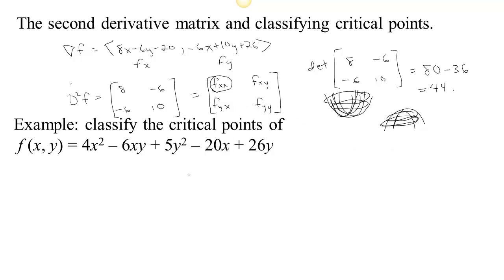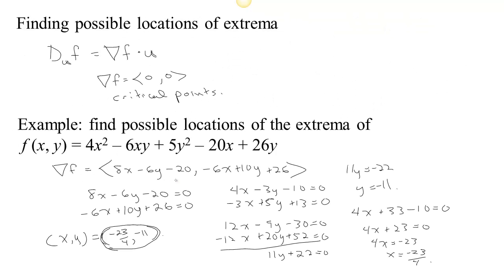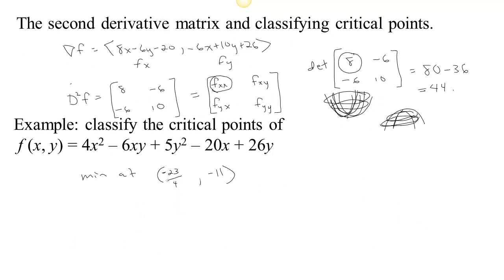For this function, we have one critical point, and because the determinant was positive, it's either concave up in all directions or concave down in all directions. Looking at f_xx, it equals 8, which is positive — concave up in the x direction — so it must be concave up in all directions. That means the critical point we found is actually a minimum. Since the determinant of the second derivative is positive and f_xx is positive, we have a minimum at x equals negative 23/4, y equals negative 11.